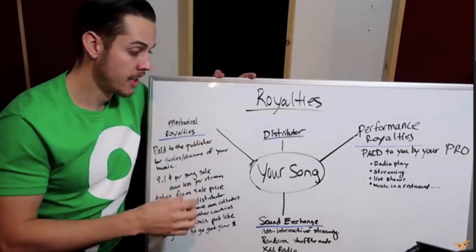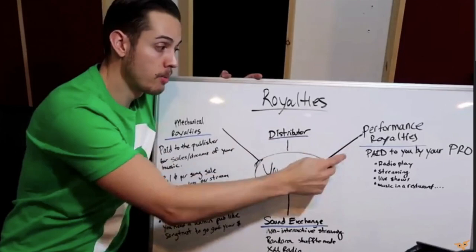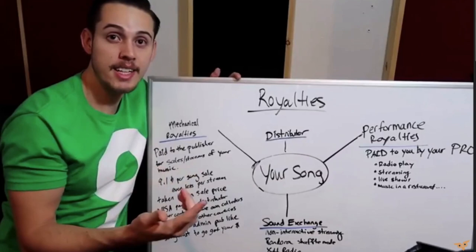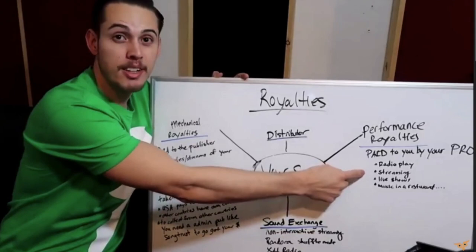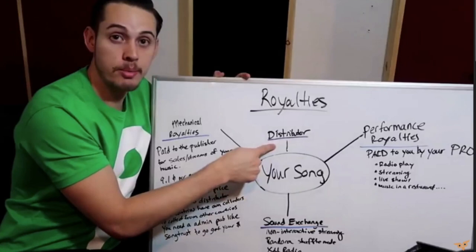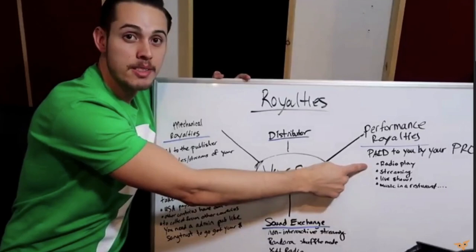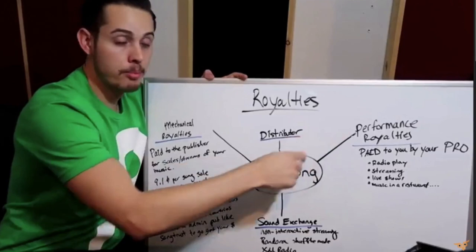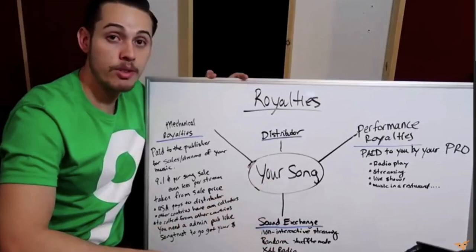That's mechanical royalties broken down. Now let's look at the other side: performance royalties. Performance royalties are separate from mechanical and distribution money. They're paid to you by your PRO — your performance rights organization — which is something like BMI or ASCAP. I'm registered with BMI. They collect money from radio play and streaming. If you have a song streaming on Spotify, you're not only making money from your distributor and mechanical royalty — you're also earning a performance royalty.